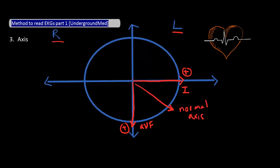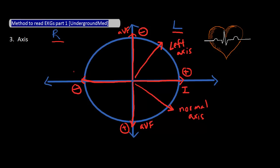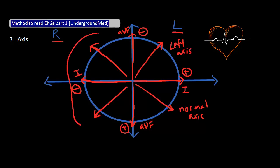If the QRS complex of AVF is mainly negative but lead 1 remains positive, the net depolarization of the heart moves in this direction — we call this a left axis deviation. Similarly, if the QRS complex of lead 1 is mostly negative and AVF is positive, the axis will point down in this quadrant. And if both lead 1 and AVF are negative, the axis will point somewhere in this quadrant. Both of these last two scenarios are considered right axis deviation.